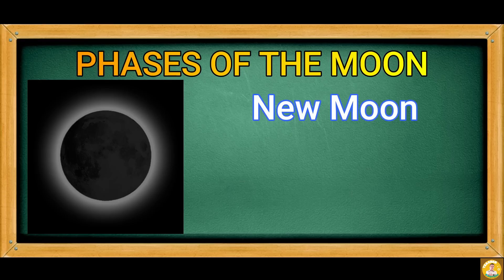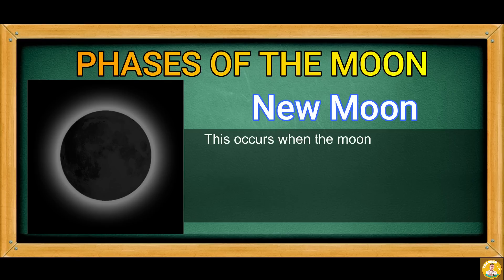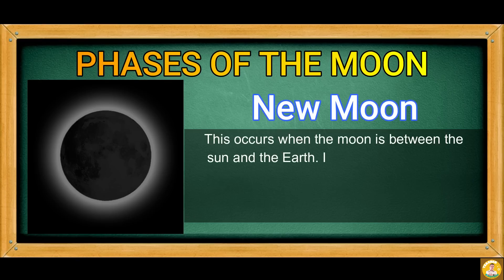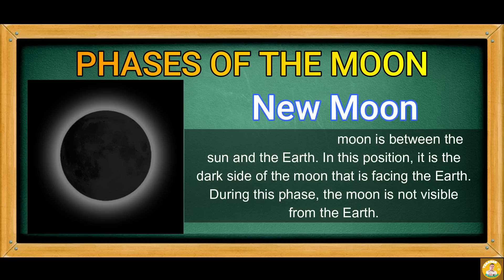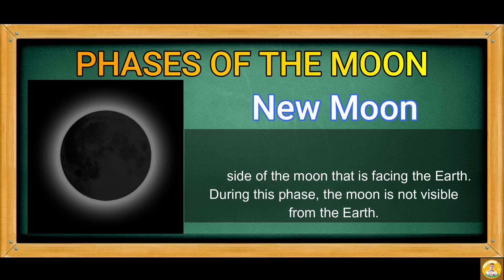New Moon. This occurs when the moon is between the sun and the Earth. In this position, it is the dark side of the moon that is facing the Earth. During this phase, the moon is not visible from the Earth.